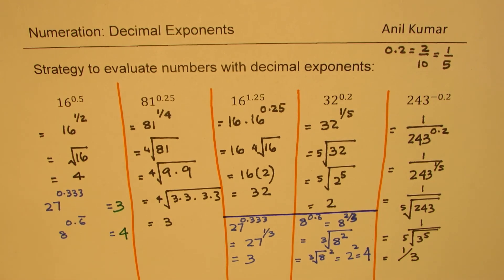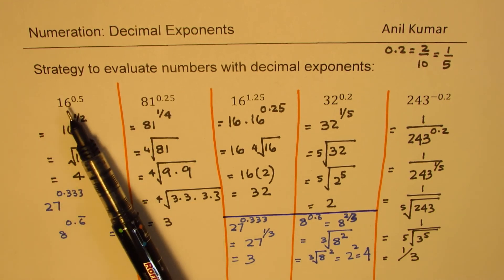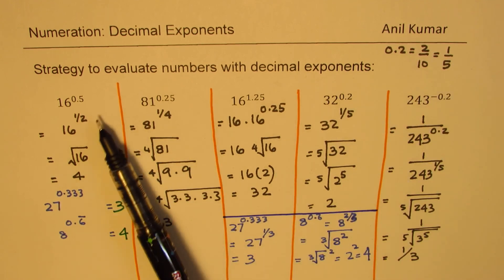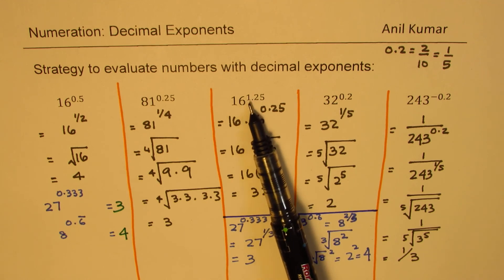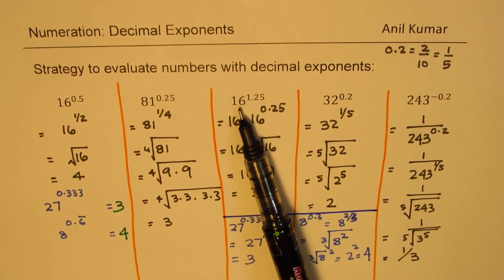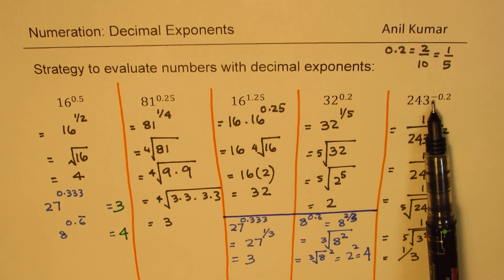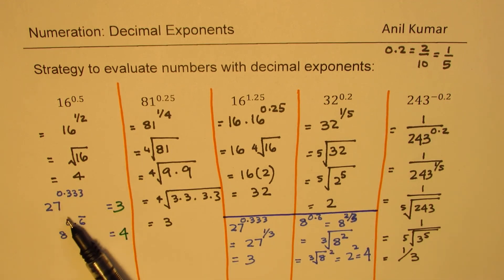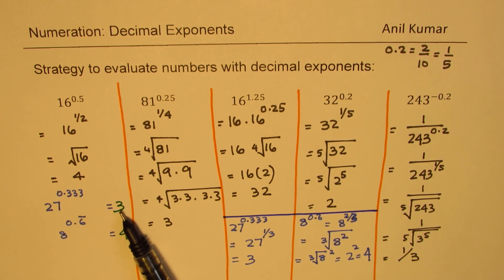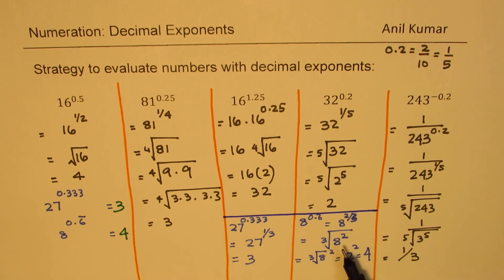What we've learned in this video: first, convert your decimals to fractions, then write them as radicals and find your root. If the decimal is like 1.25, that means one whole part times the fractional part — in this case 16 times the fourth root. If the decimal exponent is negative, that means reciprocal. And if you have a repeating decimal, convert it to a fraction: 0.333 recurring is 1 over 3, and 0.6 recurring is 2 over 3.